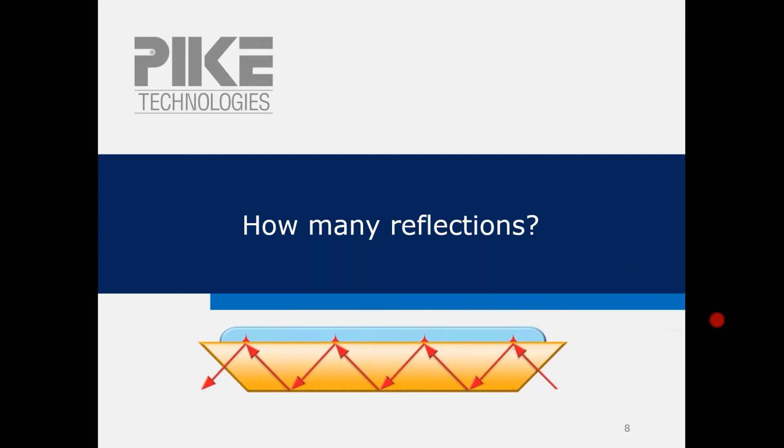That really depends on how someone's defining it. I've seen commercial manufacturers define it both ways. Most often at Pike, we define it as the number of reflections on the sample. So in our case, we would call this four reflections. So this is important when you're working on publications. It's always important to understand the dimensions of your multiple reflection ATR element. So if you read in a publication, oh, they used a 10 reflection crystal, well, is that 10 reflections on the sample or is it 10 total reflections?